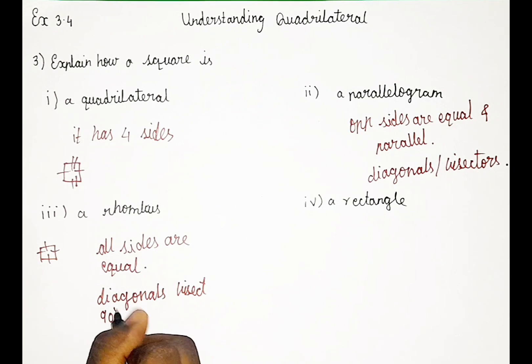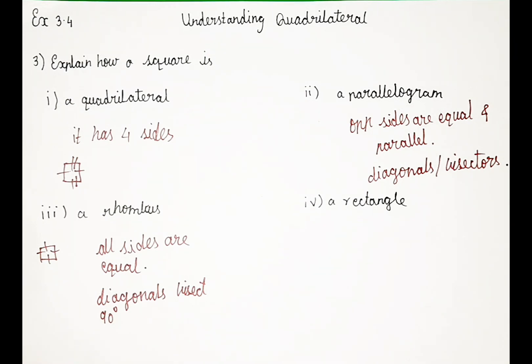So in square, now diagonal will bisect each other at 90 degree. In a similar way, rhombus will also bisect the diagonal in 90 degree.